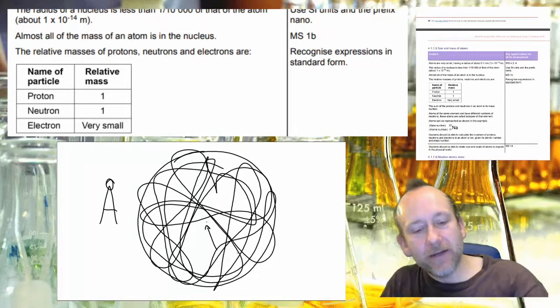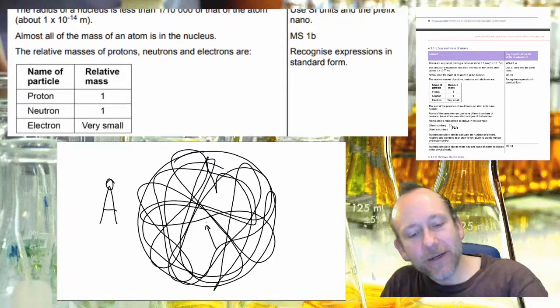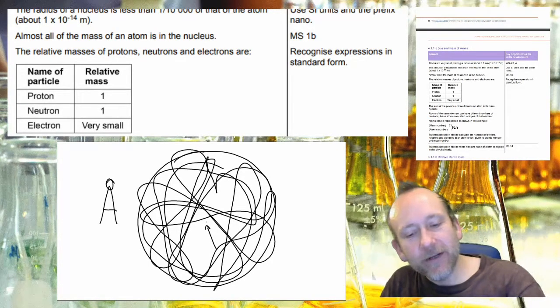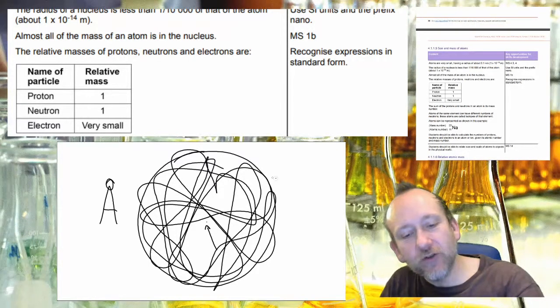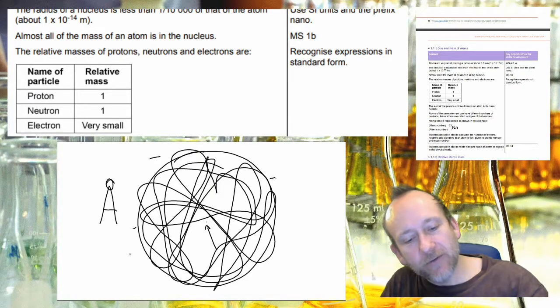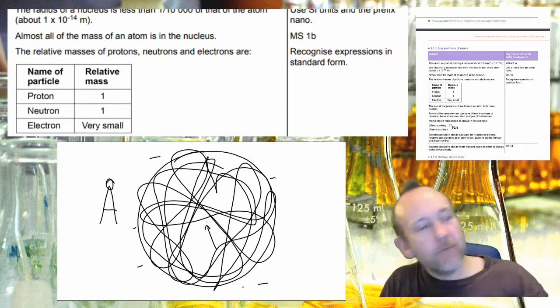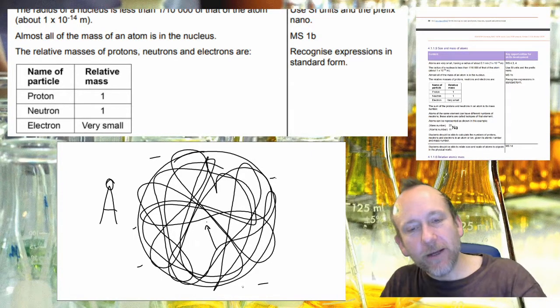They're describing this round shape basically and by describing it what they're doing is they're giving it a bit of negative charge every time they pass around the outside.